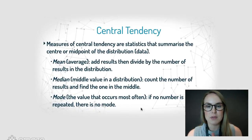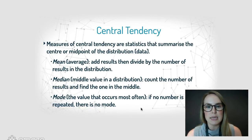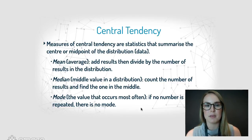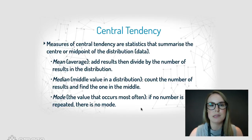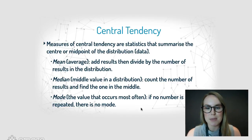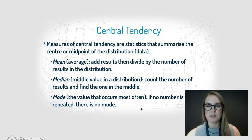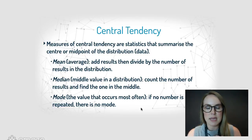Now let's look at central tendency. You would have seen words like mean, median, and mode before. These summarize the midpoint or centre of the data. With the mean, you add all scores together and divide by the number of scores. The median is the middle score when all responses are ranked. The mode is the one that occurs most often.